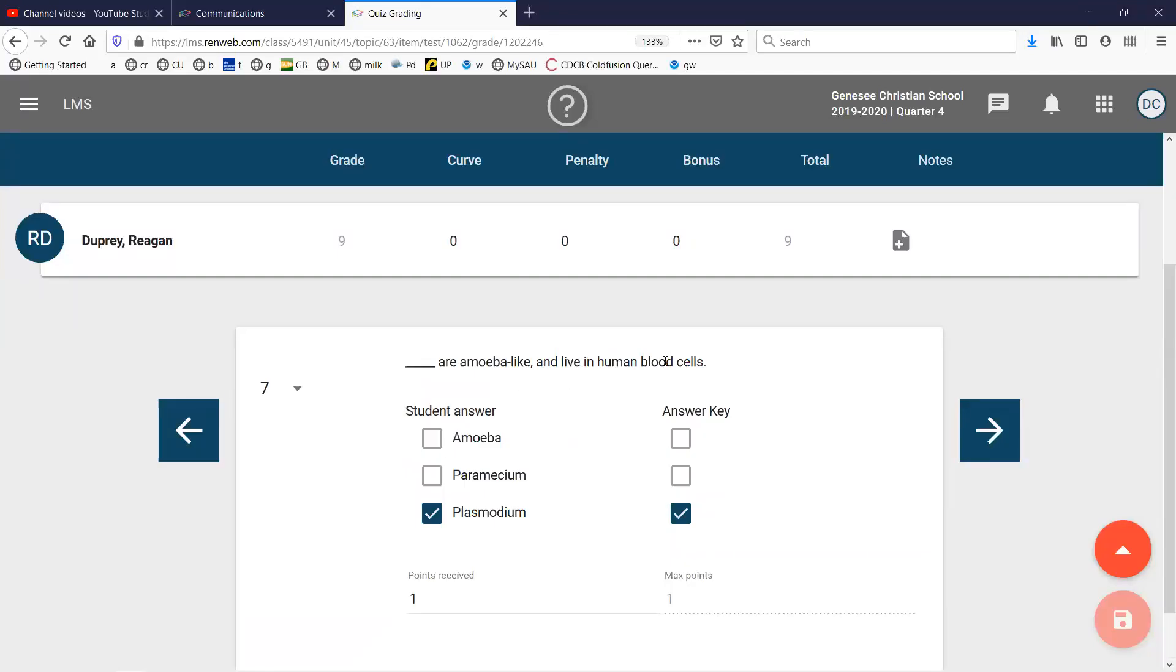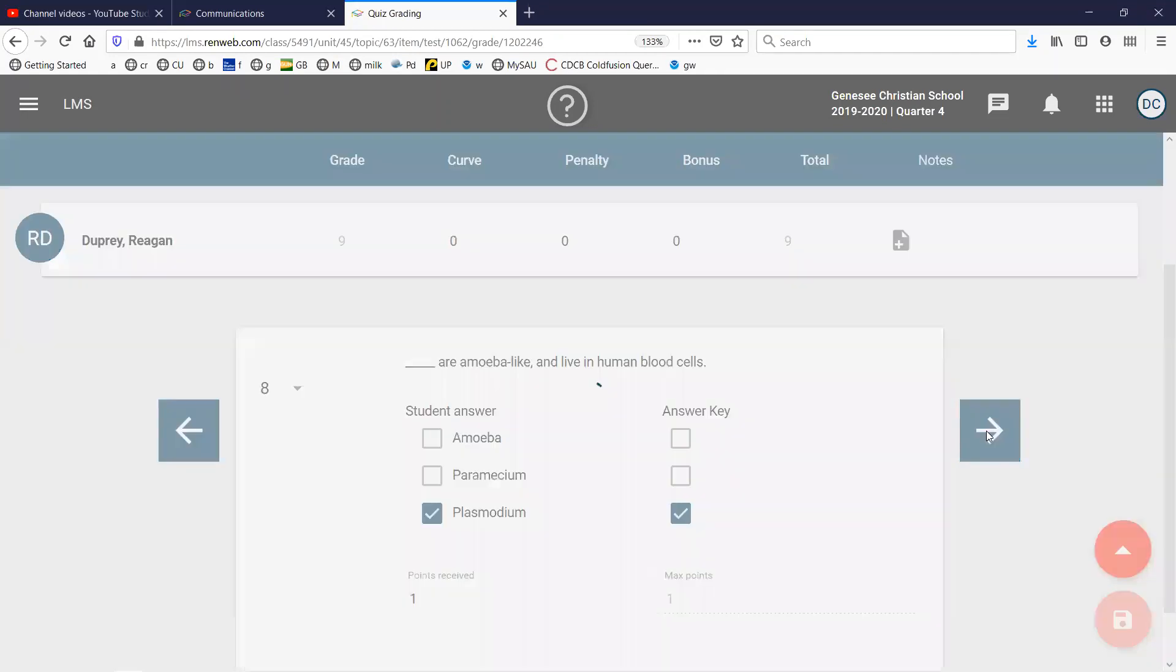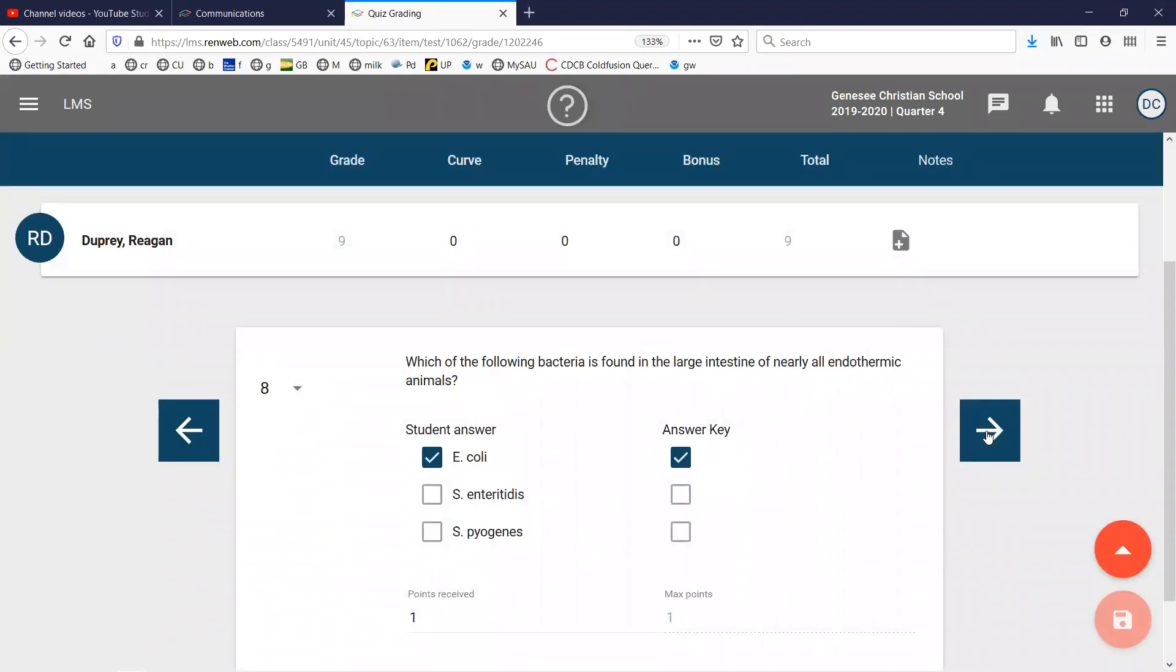Amoeba-like, live in human blood cells. Well, amoeba themselves don't live in human blood cells. And paramecium aren't amoeba-like, so it would be plasmodium. Which of the following is found in large bacteria, large intestine of nearly all endothermic animals? That would be E. coli.